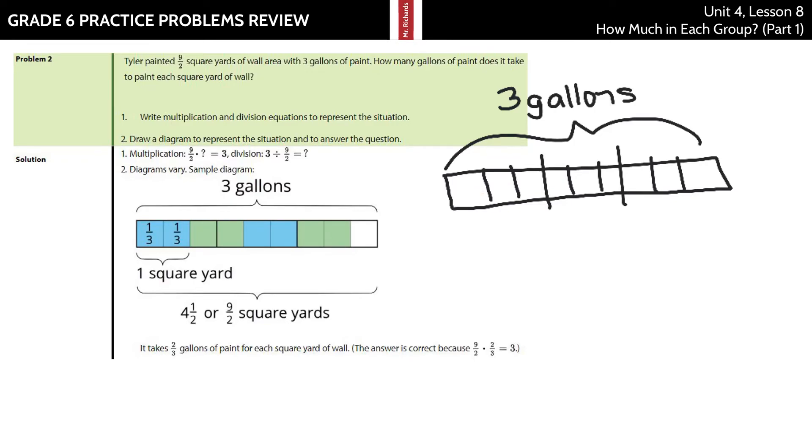Well, if each of these is half of a yard, that would mean then that this portion of it is one square yard. Because, again, the entire thing was nine-halves square yards. So where are we going with this?